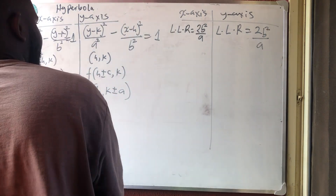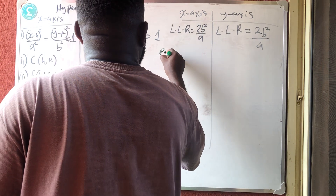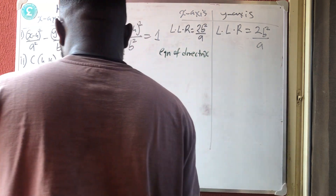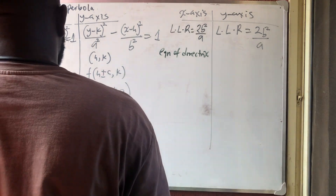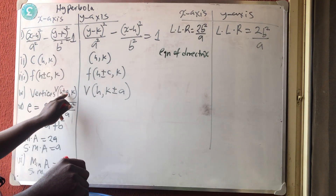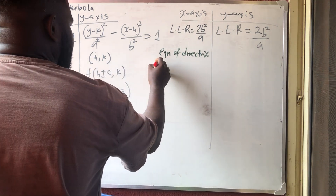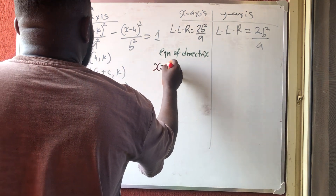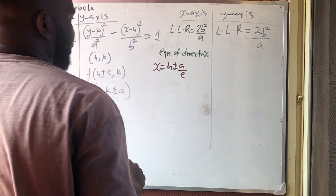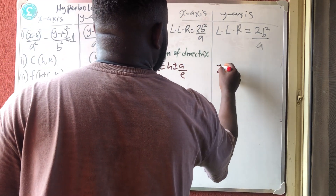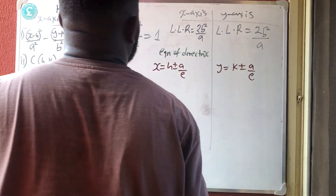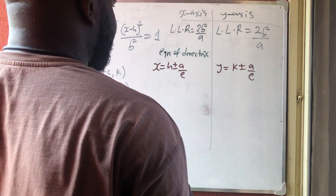The equation of the directrix is derived from the vertex. Since the vertex is at h ± a, the directrix equation for the x-facing hyperbola is x = h ± a/e. For the y-facing hyperbola it is y = k ± a/e. That is the equation of the directrix.